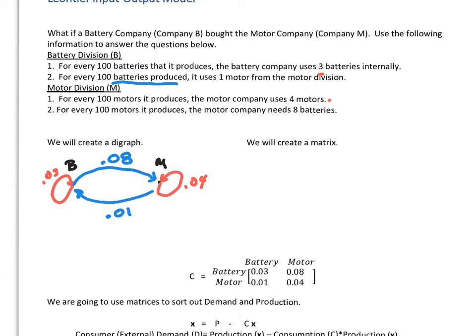So the digraph kind of helps us because then we're going to go ahead and create a matrix for this. The matrix, we're going to start with on this side. What are we moving from? And then on the top, going down, what are we moving to? And so when we set up our matrix for this, this is going to be a 2 by 2. And I'm going to have B and M and B and M. So from batteries to batteries, that should be pretty straightforward, 0.03. And then motors to motors, that's going to be 0.04.